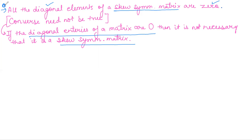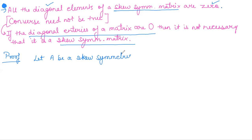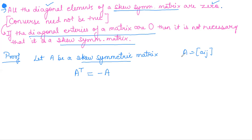We will prove this part. Let A be a skew-symmetric matrix. We want to prove that its diagonal entries are zero. Let A have elements of the form a_ij. Since A is skew-symmetric, we know A transpose equals minus A. If A has elements a_ij, then A transpose has elements a_ji. So we can say a_ji equals minus a_ij.